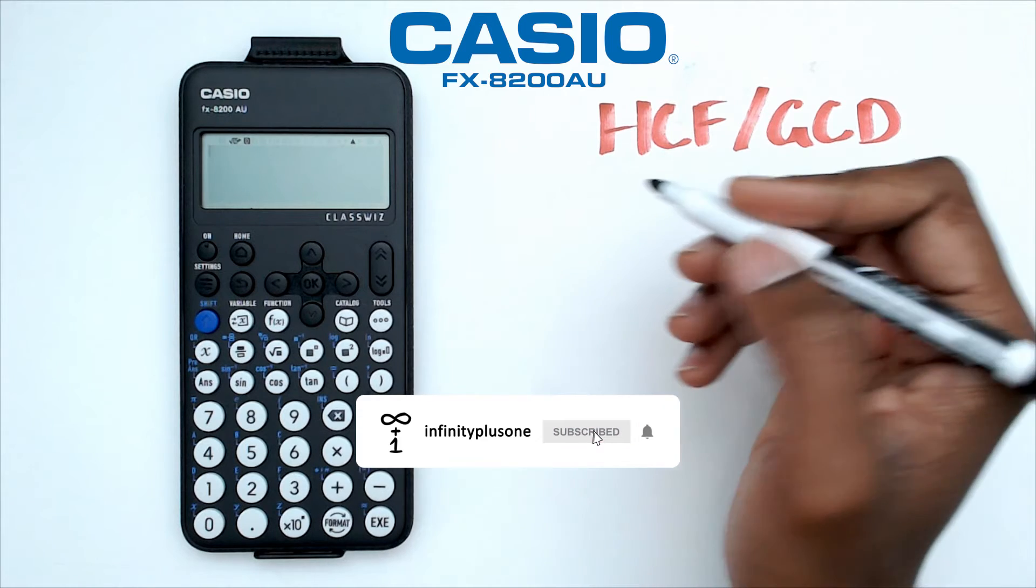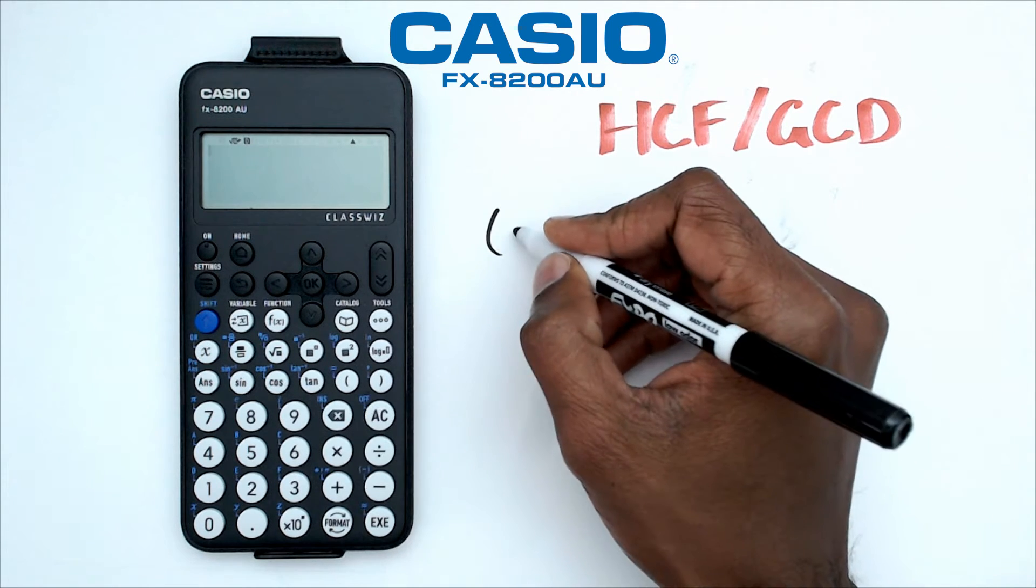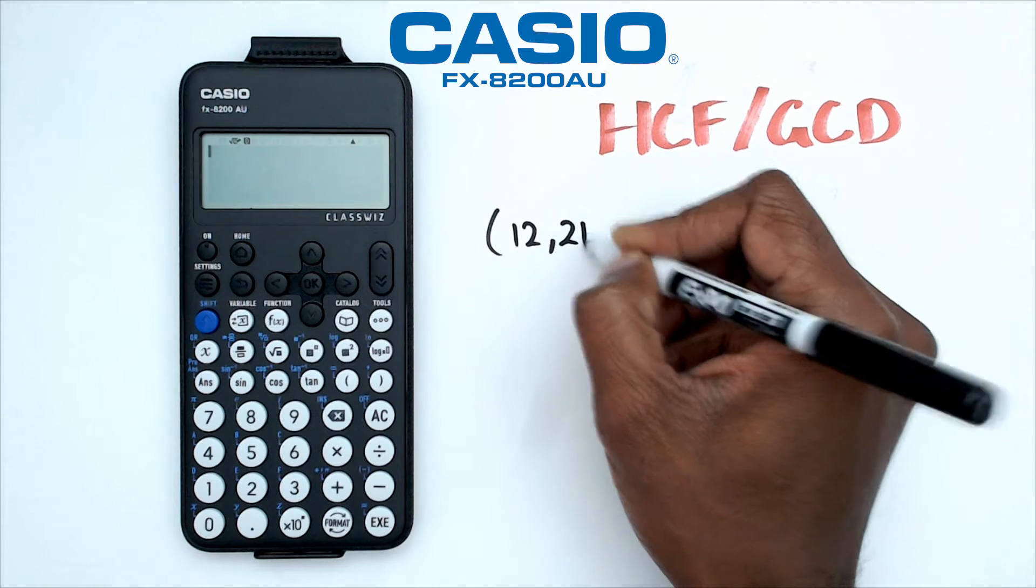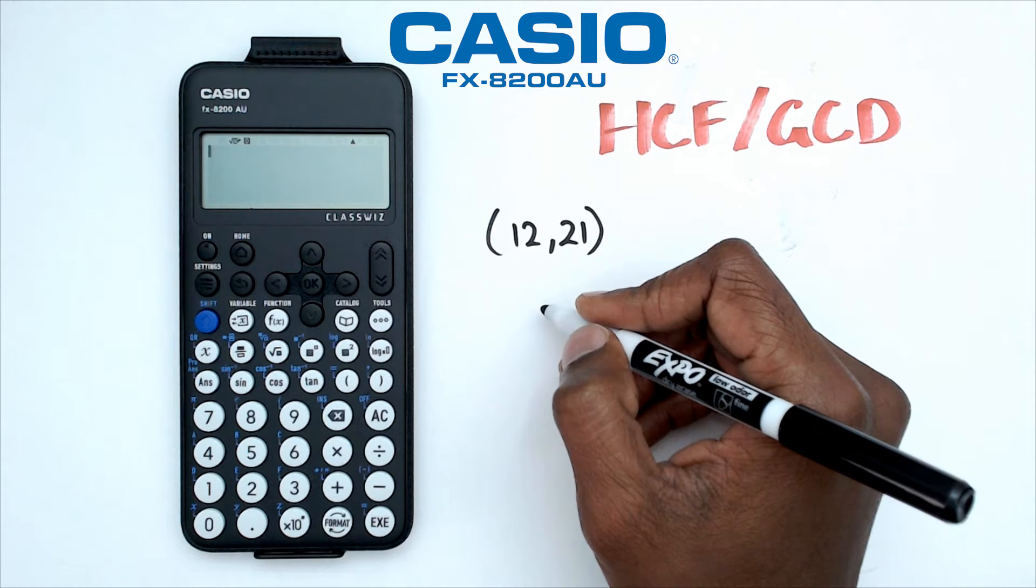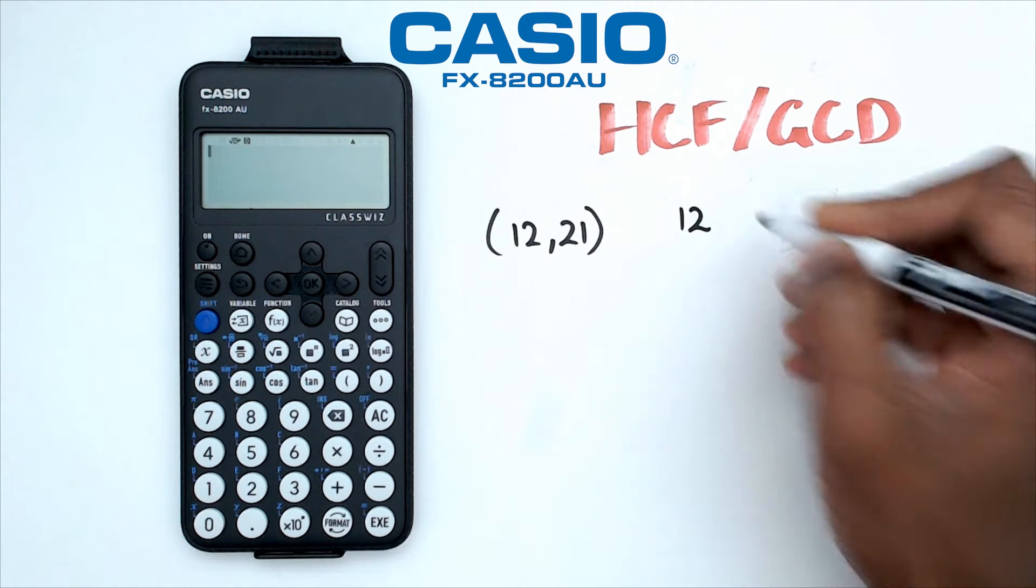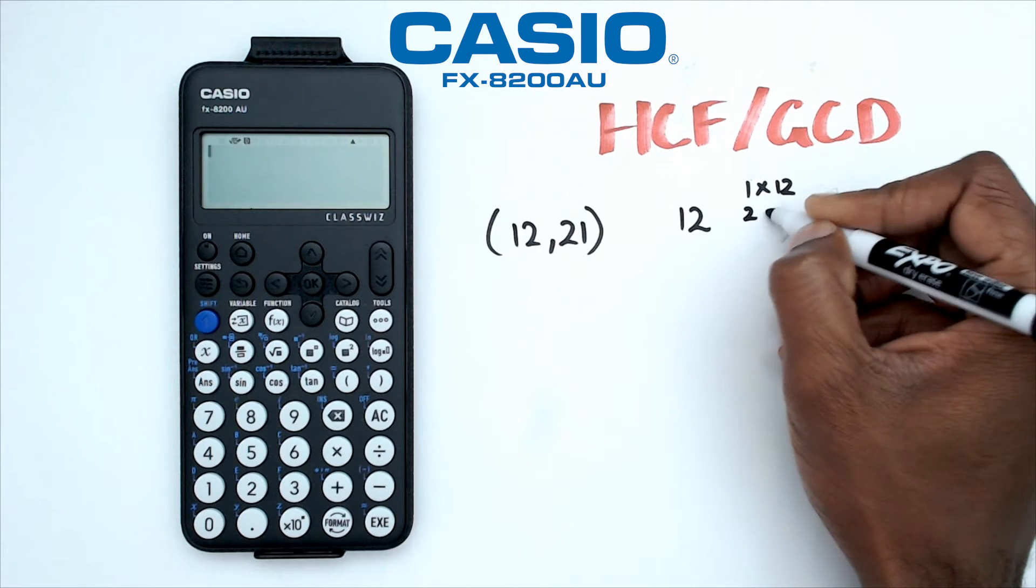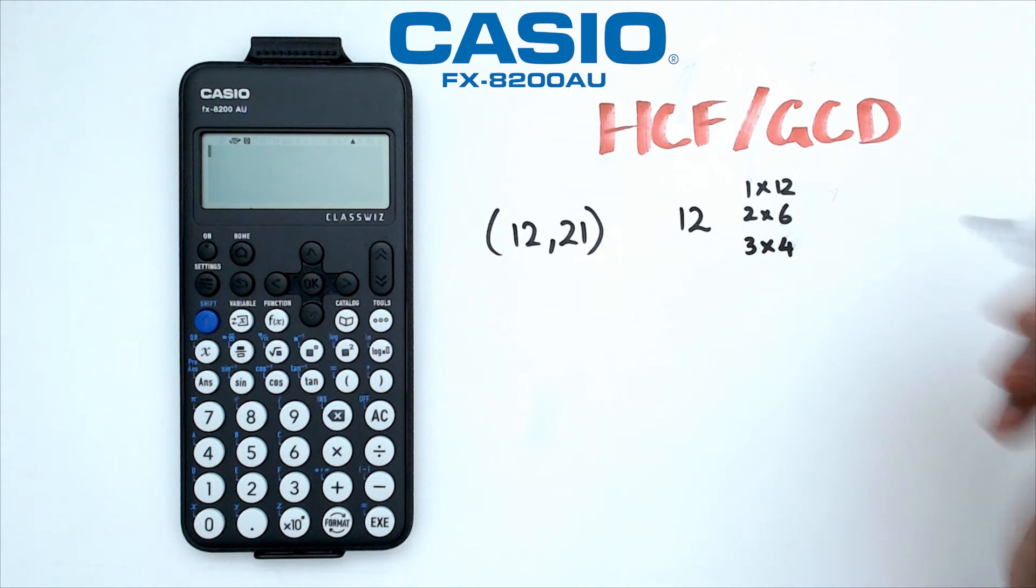So normally, when we want to find a highest common factor between two numbers, let's say for example, we're going to find it between 12 and 21. What we would do is we'd actually write down all the factors of 12. Now in this case for 12, I'm just going to do this first. I've got 1 times 12, 2 times 6, 3 times 4.